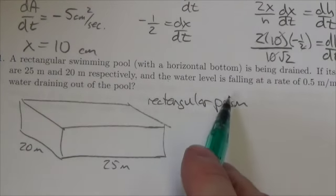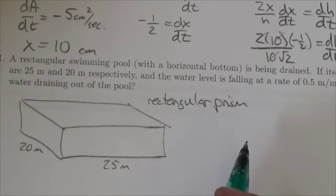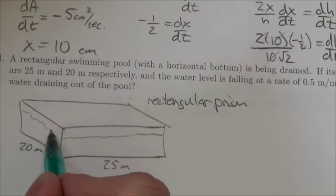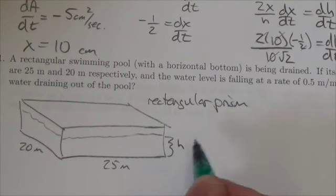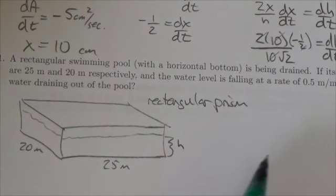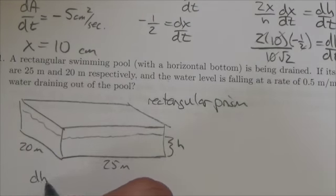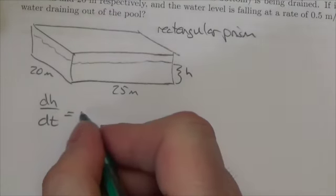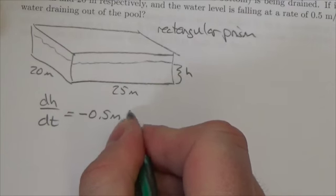And the water level is falling at a rate of 0.5 meters per minute. So here's the water in here. The height here of the water is falling at a rate of 0.5 meters per minute. So dh by dt, sorry I can't see that, is going to be negative 0.5 meters per minute.